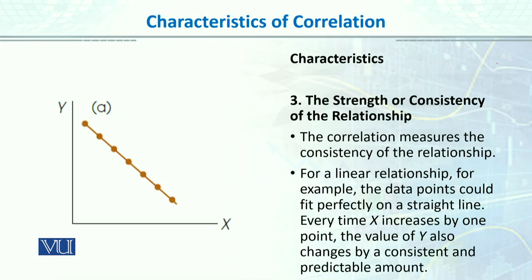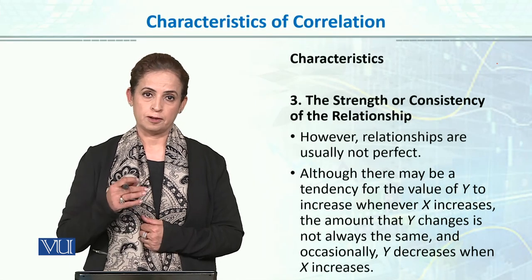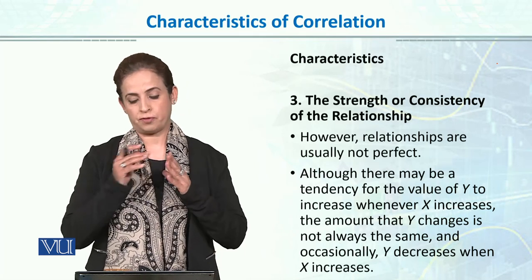The third characteristic of correlation is the strength or consistency of the relationship, and that's the main thing the correlation coefficient tells you about. For a linear relationship, the data points could fit perfectly on a straight line. Every time x increases by one point, the value of y also changes by a consistent and predictable amount. However, relationships are usually not perfect — there are very few examples where we can have a perfect correlation.